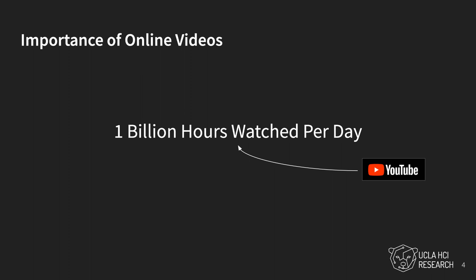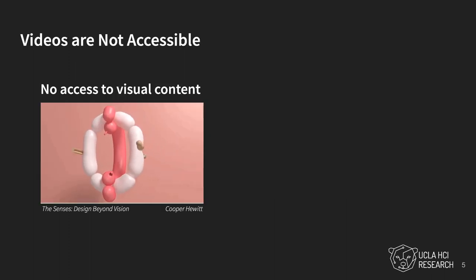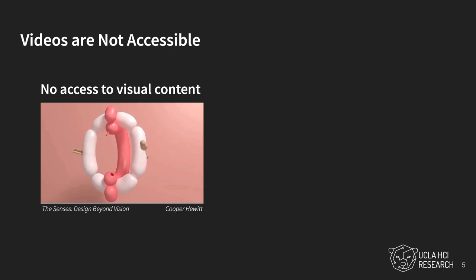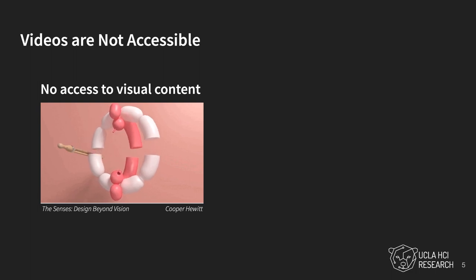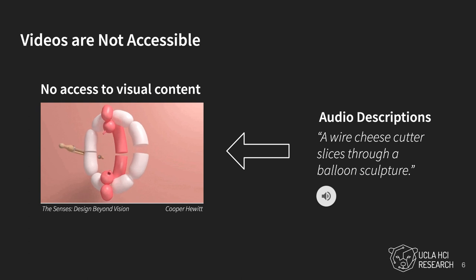Videos provide information both auditorily and visually, but the visual content in videos is not accessible to blind and visually impaired audience members. Traditionally, to make videos accessible, professionals create audio descriptions that describe the visual content in a video.